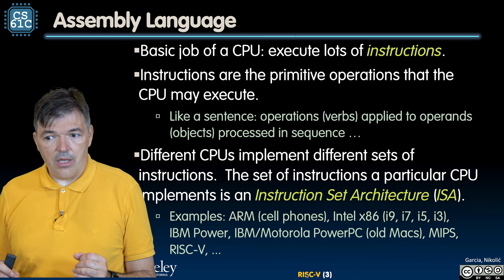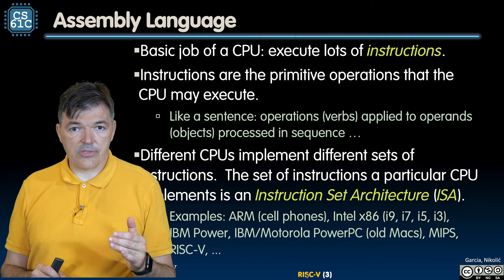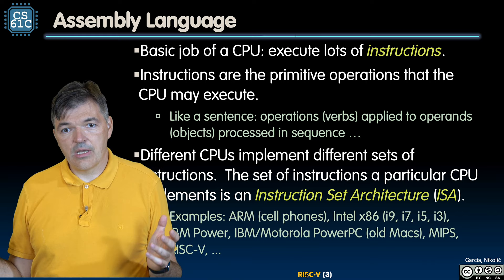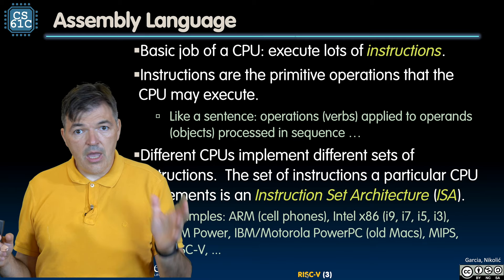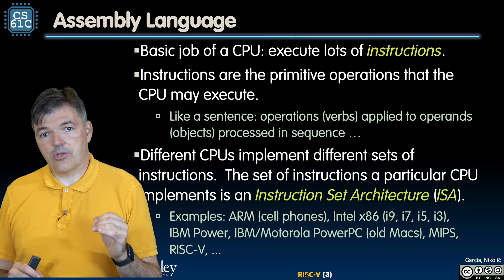When we are thinking about the assembly language, we think about the instructions executed by the processor. The basic job of a CPU is to execute lots of instructions. When we speak about a processor running at a modest speed nowadays of one gigahertz, that means one cycle lasts for one nanosecond, which is approximately the time it takes to execute one instruction. So each processor will execute one billion instructions per second — and that's a lot.